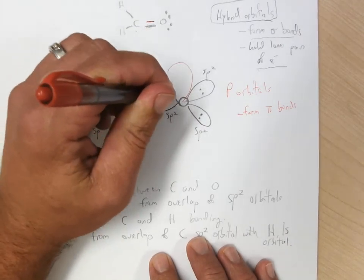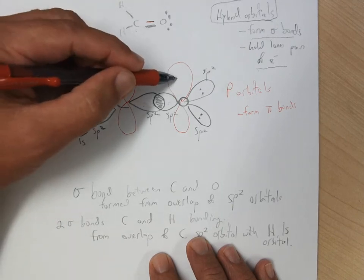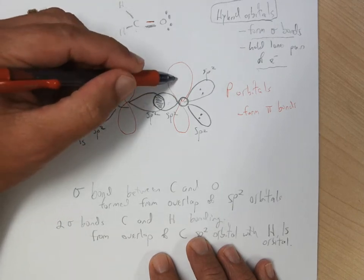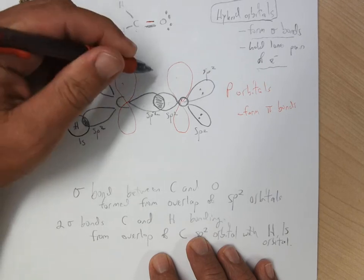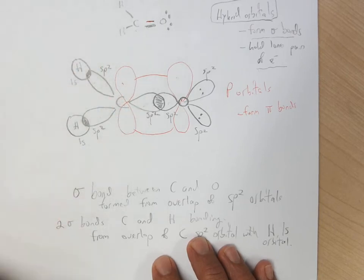and on the oxygen, we also have an unhybridized p-orbital. And so these are generally drawn longer and skinnier than they should be, so they don't look like they're interacting,